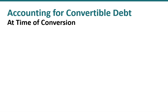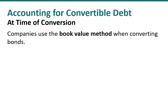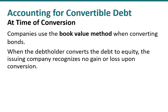At the time of conversion — that is, if the bonds are converted to common stock — the companies will use the book value method when converting the bonds. The issuing company won't recognize any gain or loss upon conversion. They will simply remove the bond payable along with any unamortized premium or discount and record the common stock at par along with additional paid-in capital.